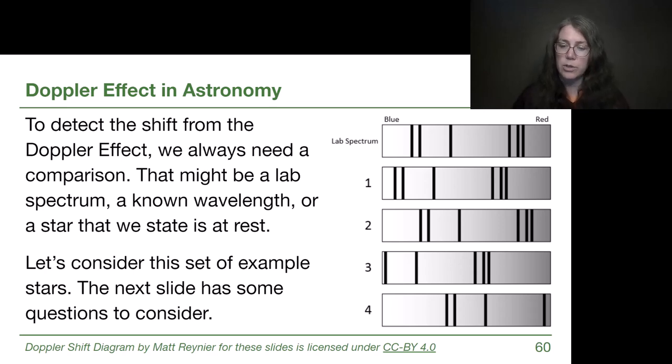So before we continue, I want you to make sure that you have in your notebook that red shifted means motion away from us, blue shifted means that motion is towards us, and big shifts means that we're going very fast, and small shifts means we're going very slow. Those are the only facts that we really need in order to apply our understanding of the Doppler effect, so let's see how we do.